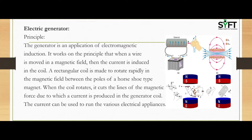The electric generator is a machine that converts one form of energy into another, especially mechanical energy into electrical energy. The generator works on the application of electromagnetic induction — when a wire is moved in a magnetic field, a current is induced in the coil.